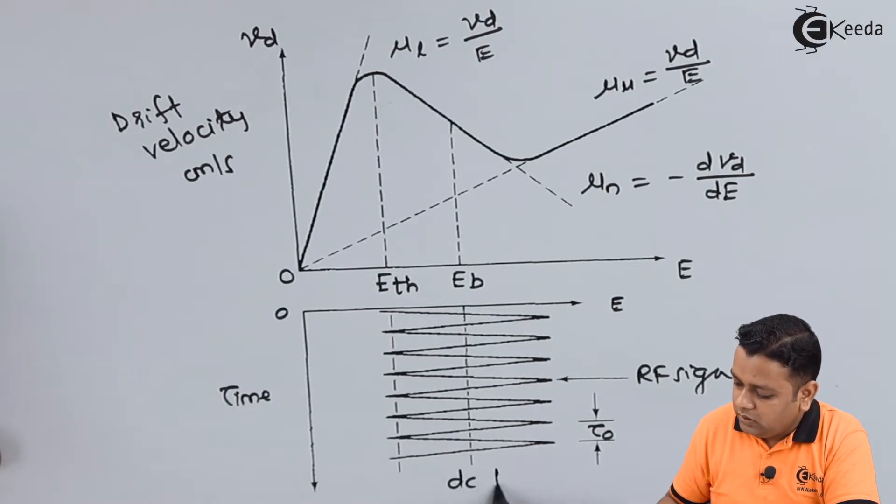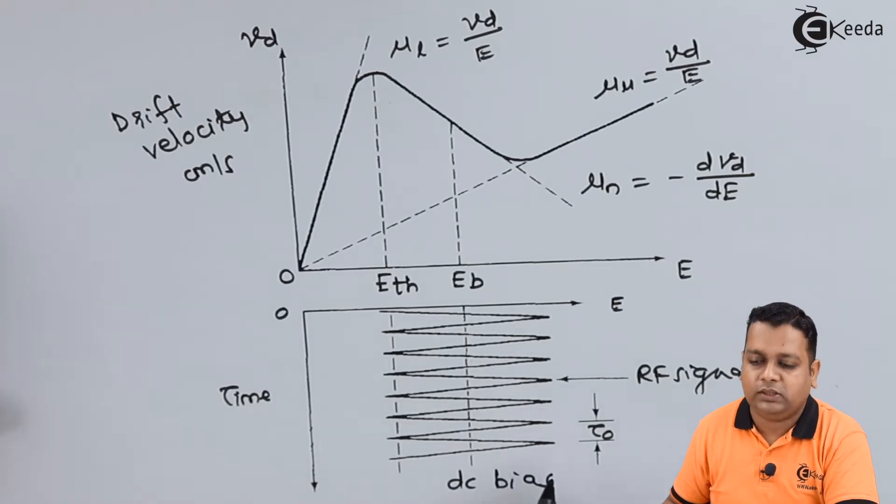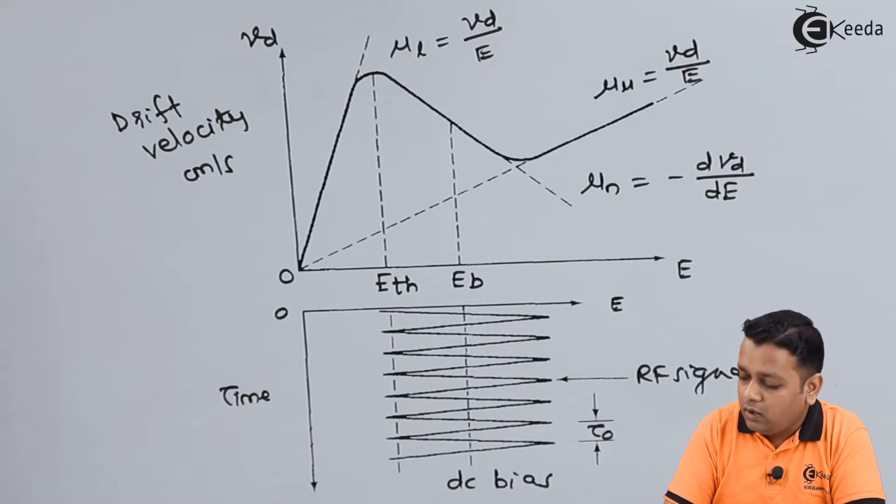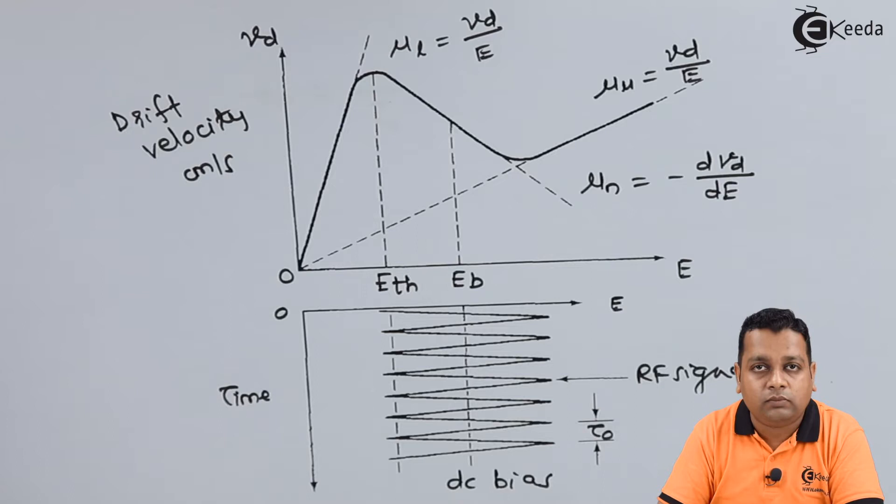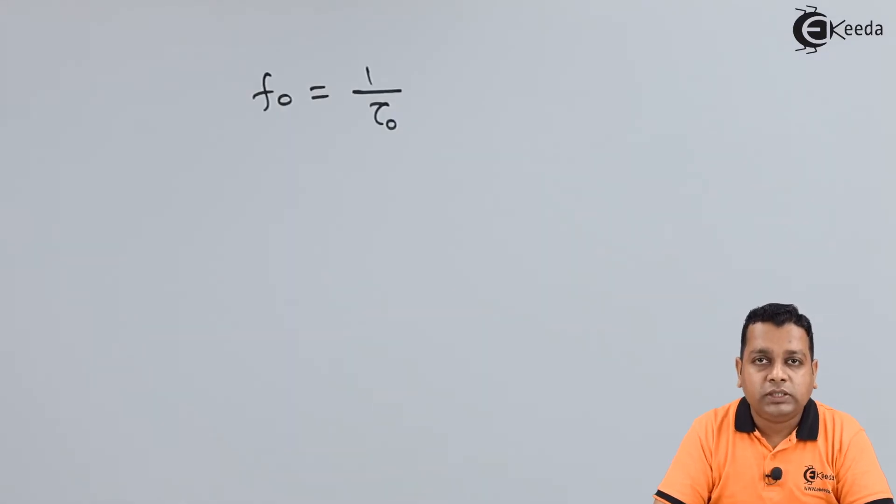This is the DC bias. We have the knowledge of the transit time, and accordingly we can have the various modes of operation into the gun diode, and we want the LSA mode to operate. As we see that the RF signal has a swing with respect to the diagram shown here.